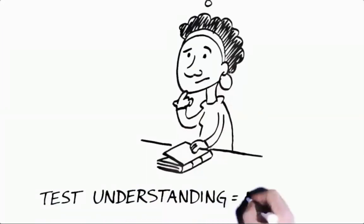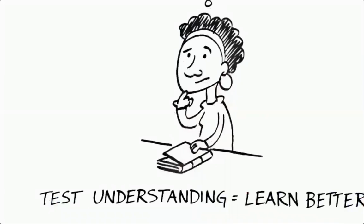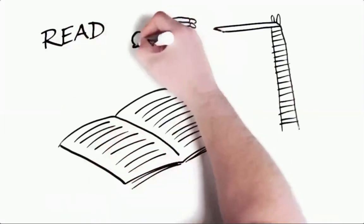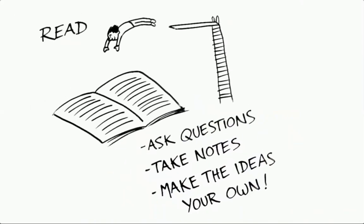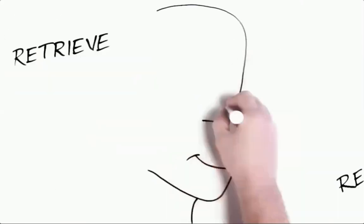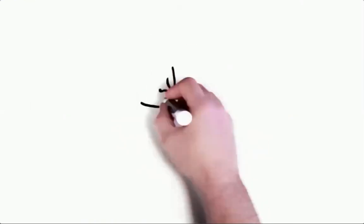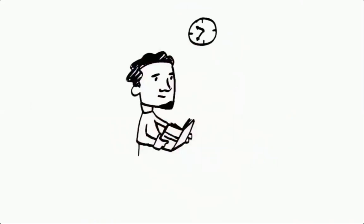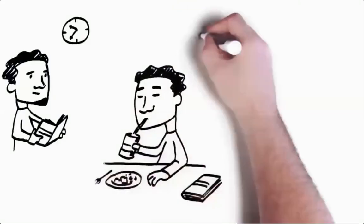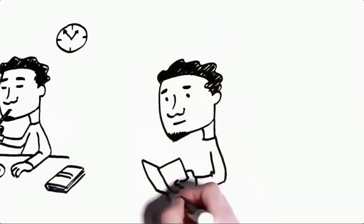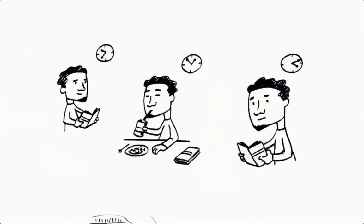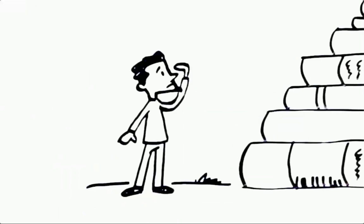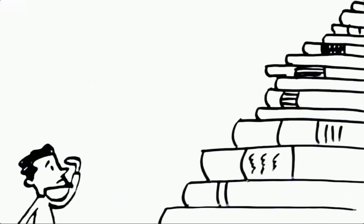Next, read — actively search for answers, read critically, ask questions, take notes, make the ideas your own and ask how they relate to your life. Then, retrieve — periodically pause in your reading and rehearse what you've just read, testing yourself repeatedly. The textbook offers periodic retrieval practice opportunities throughout each chapter. You can rehearse what you've learned and check your answers; if you struggle a bit, that's fine — a certain level of difficulty or challenge is desirable.